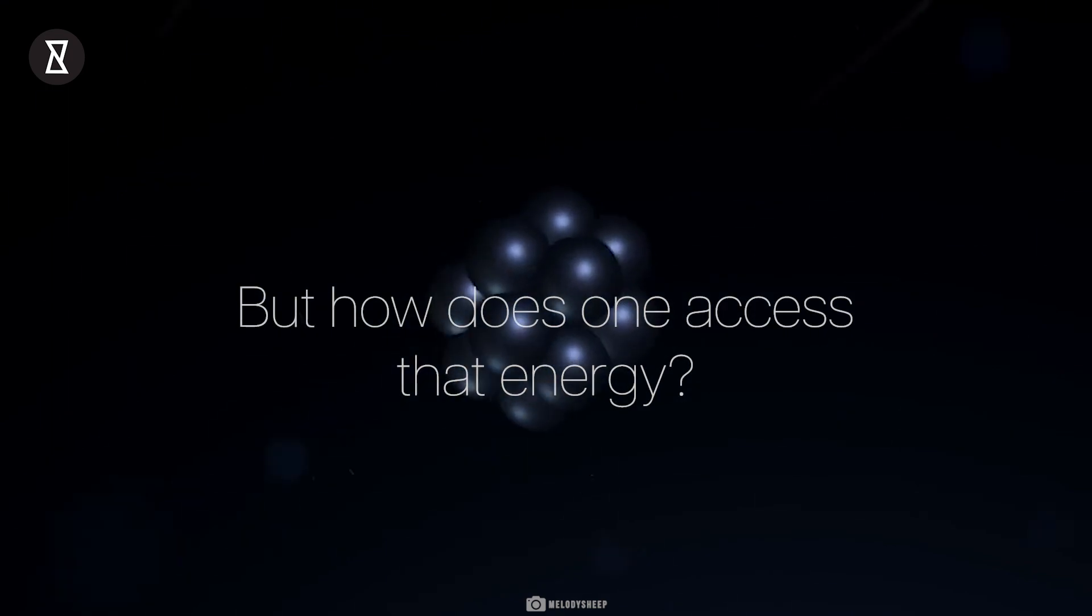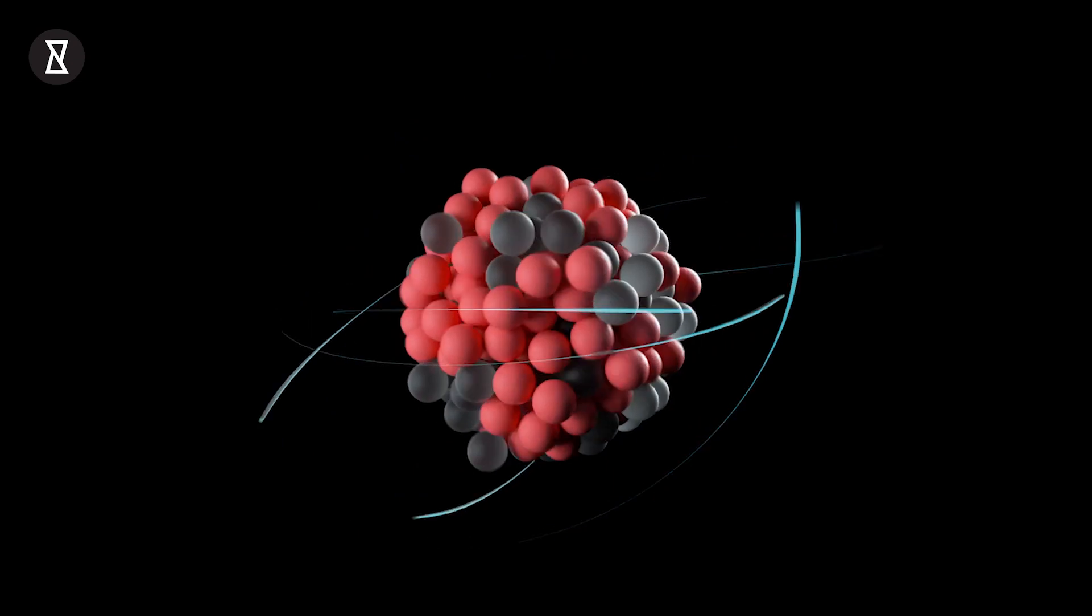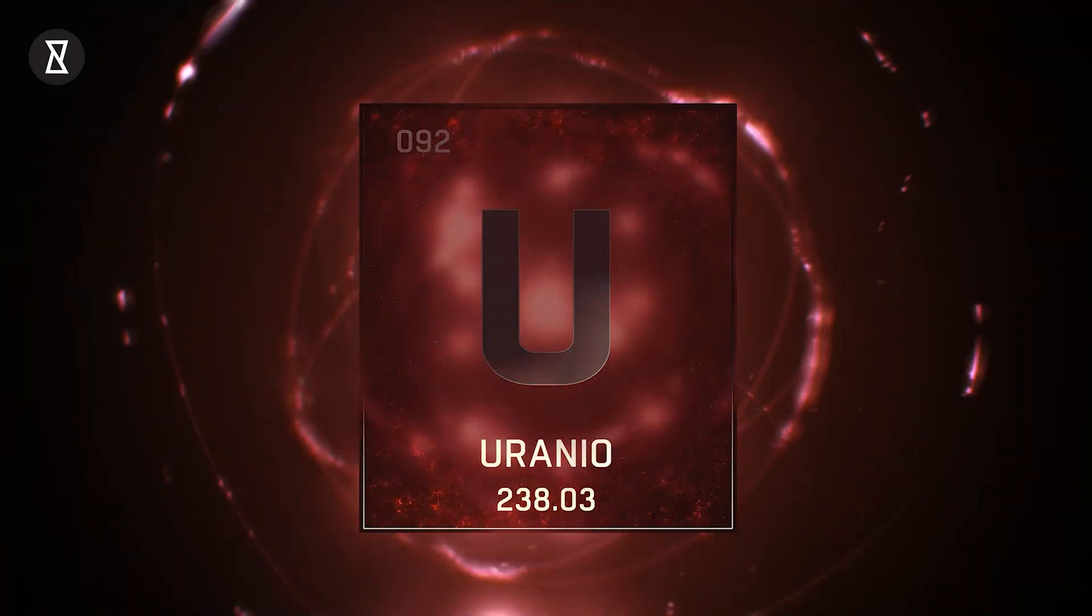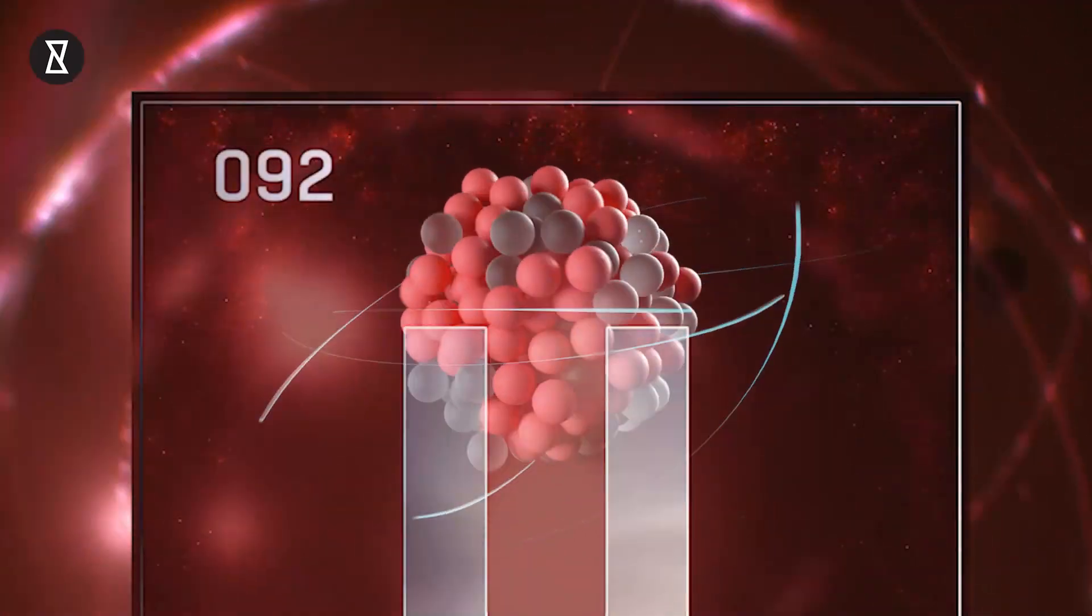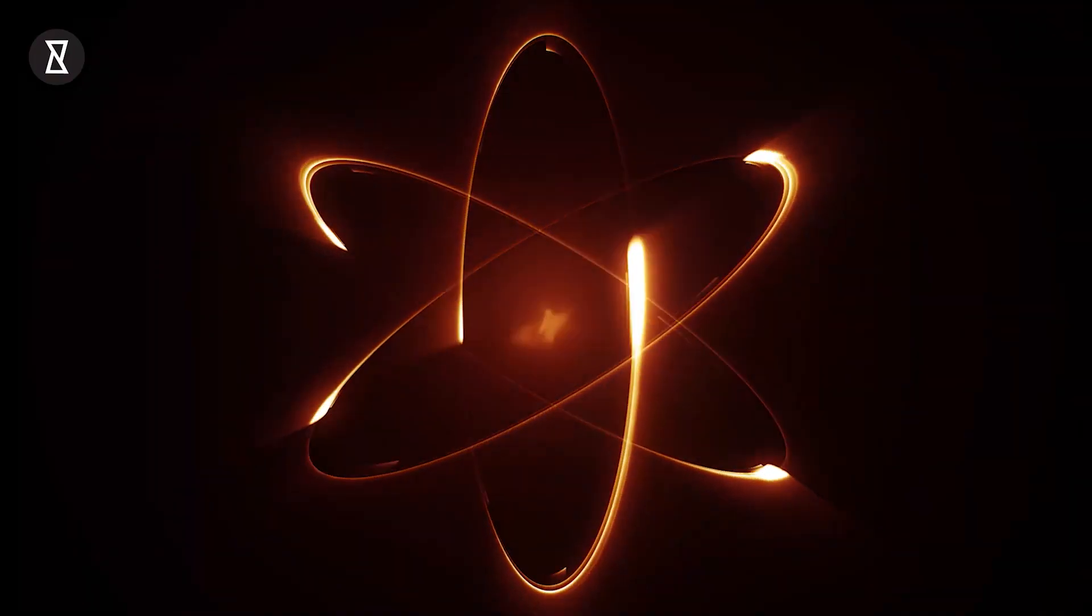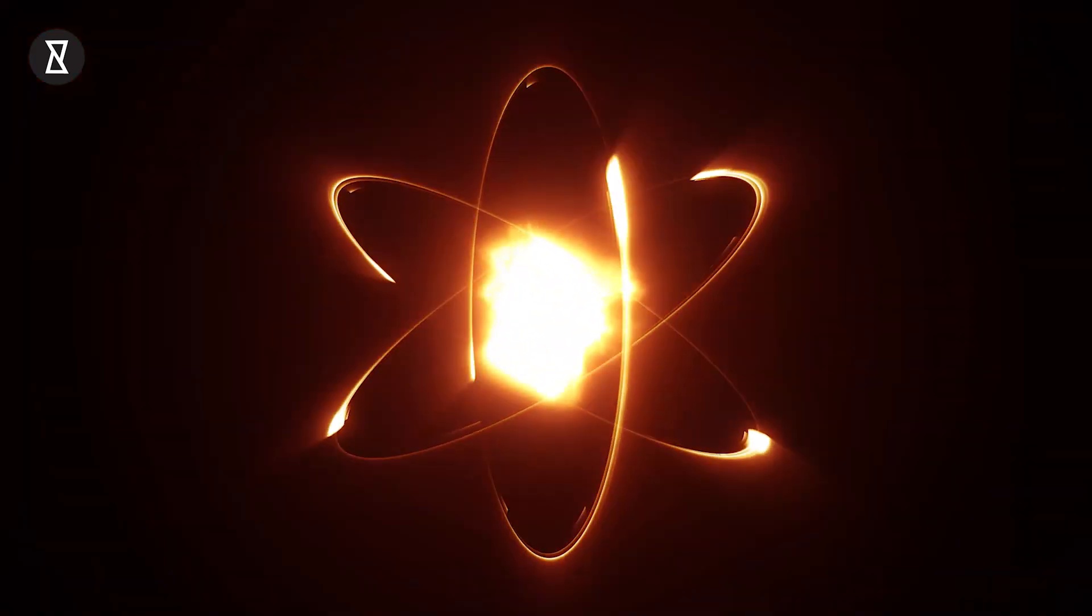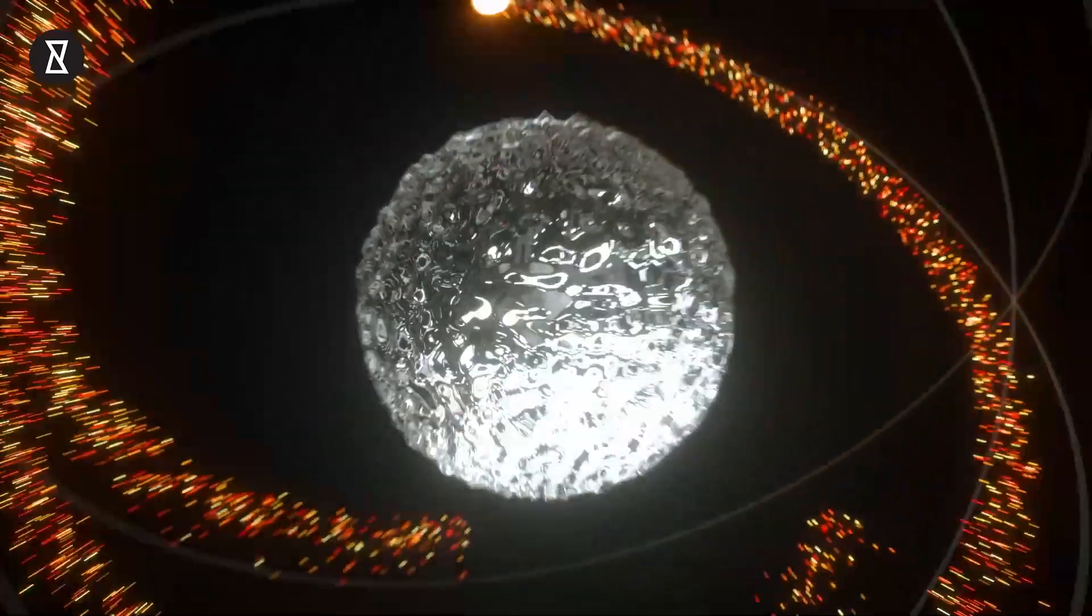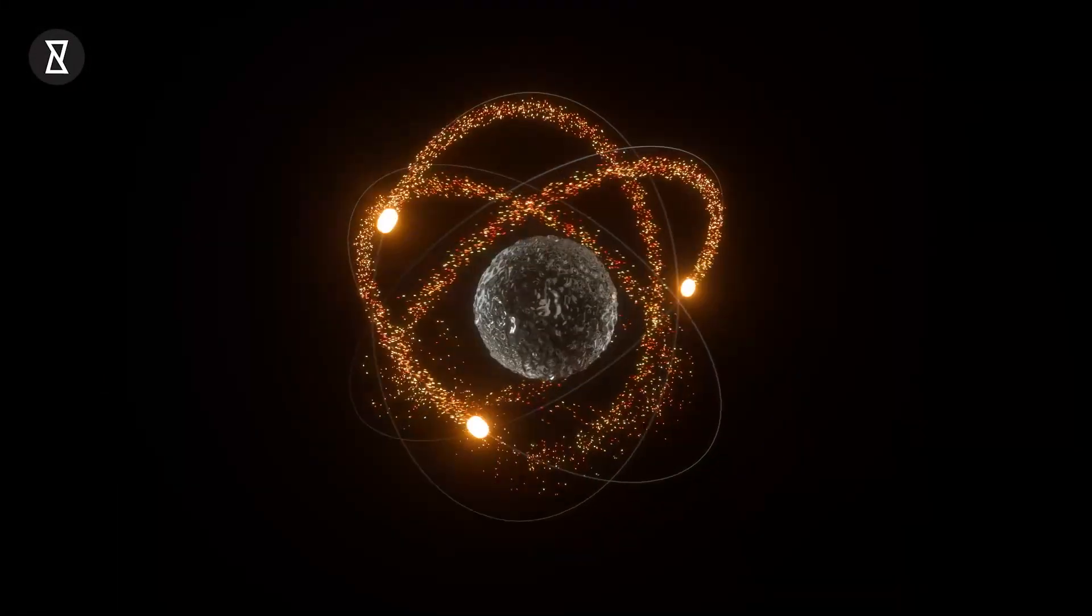But how does one access that energy? In the late 1800s, we learned that some atoms are not stable. For example, a version of uranium is unstable, because it has 92 protons in the nucleus, but has a different number of neutrons. When the number of neutrons varies, it is called an isotope. Remember, it's the atom, but with a different number of neutrons, which changes its properties.